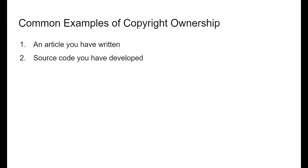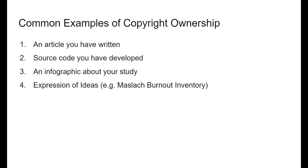What are some common examples of copyright ownership? First is an article you've written, such as a research paper or a journal article. Other things can be source code you developed — for example, a program that acts like a calculator. You can also copyright infographics, figures, tables, and even expressions of ideas, like the Maslach Burnout Inventory, which has an implementation they are able to copyright and make money off of, even though the underlying methodology of burnout cannot be copyrighted.